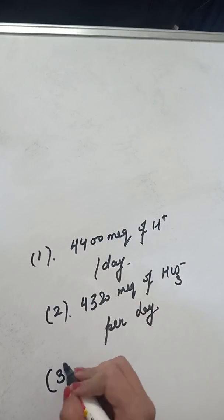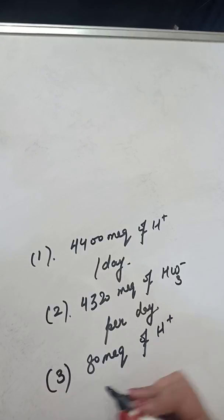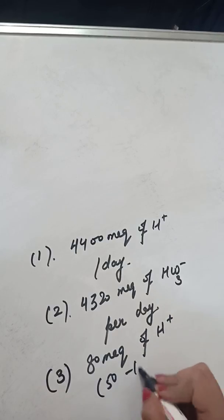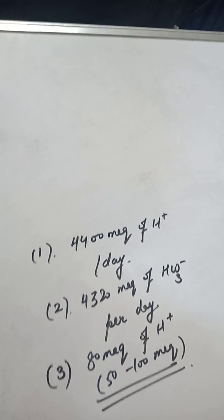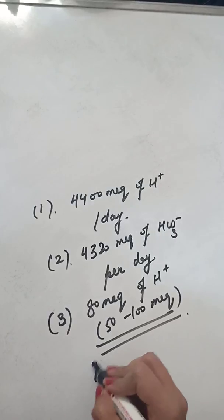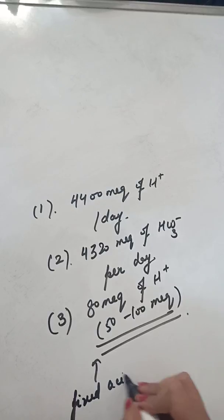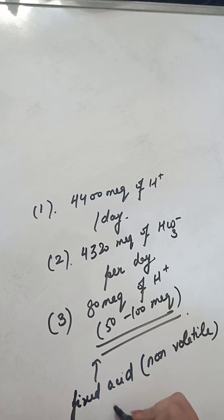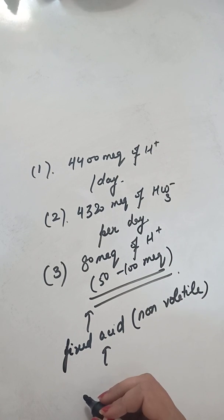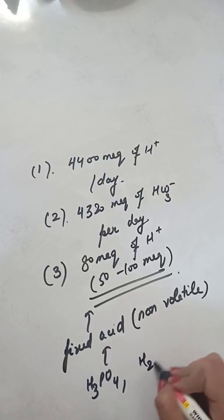The excess of around 80 milliequivalents of hydrogen ion — in the range of 50 to 100 milliequivalents — are produced as a result of addition of fixed acids, i.e., non-volatile acids formed in the body by the metabolism of sulfur-containing amino acids and phosphorus-containing amino acids, which result in the formation of phosphoric acid and sulfuric acid.